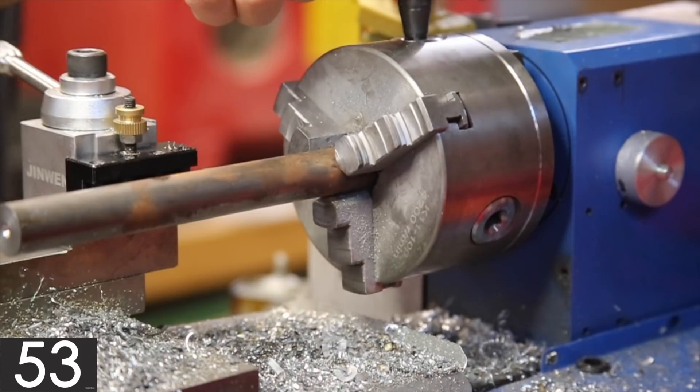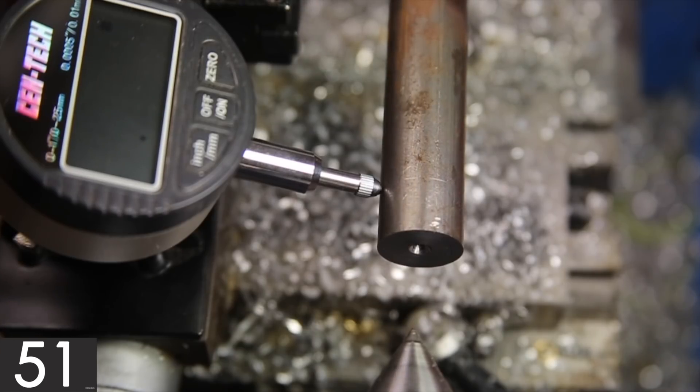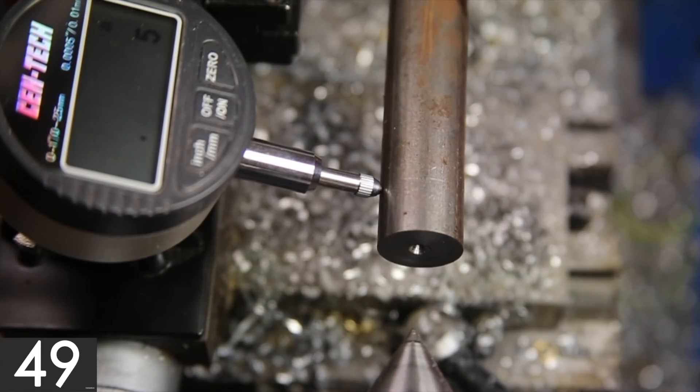Next, I extended the stick out to roughly the working length I needed. This is important because a tailstock centered in one position may not be centered everywhere else.